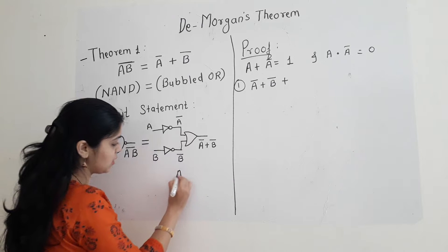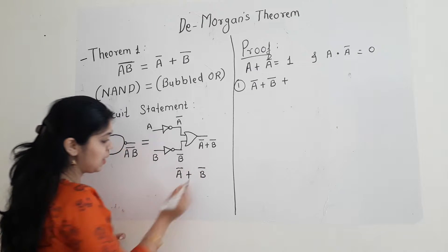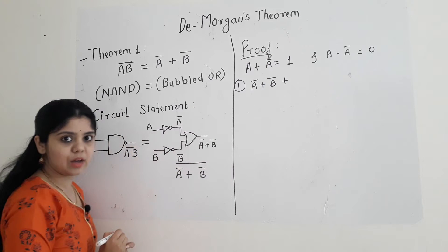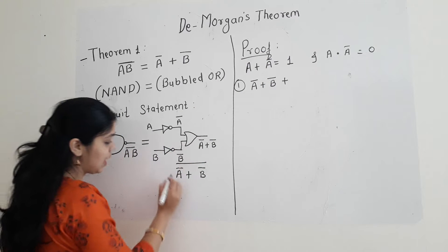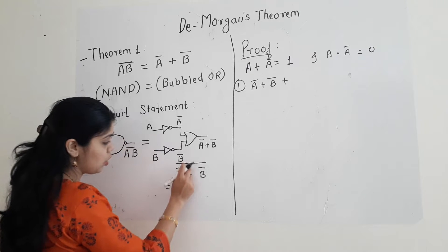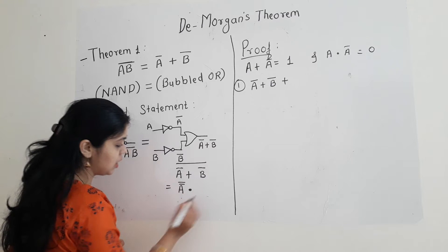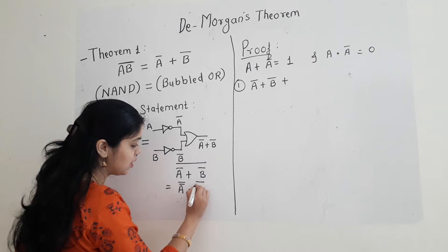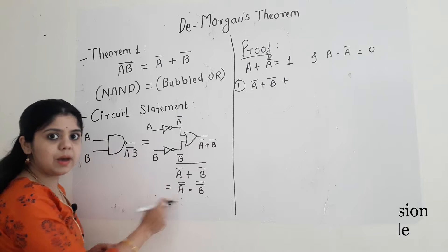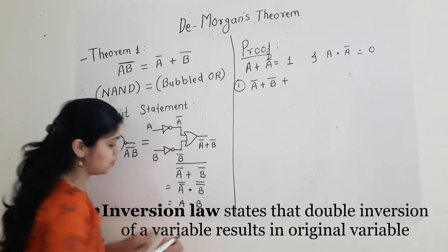I will show how I am taking the complement of A bar plus B bar — I have to take its complement, so I am giving a bar over it. This becomes A double bar, and a complement on a plus operation will give you multiplication, giving B double bar. The double bar gets cancelled, and at the output I will get A dot B.